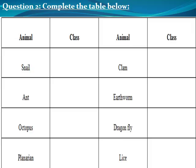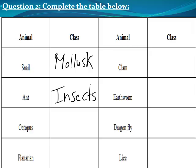Moving to question number two — complete the table below. We have the classes: mollusks, worms, arthropods, and insects. The snail belongs to the class of mollusks. Ant belongs to the group of insects. Octopus belongs to the group of mollusks. Canarian worms belong to the group of worms.